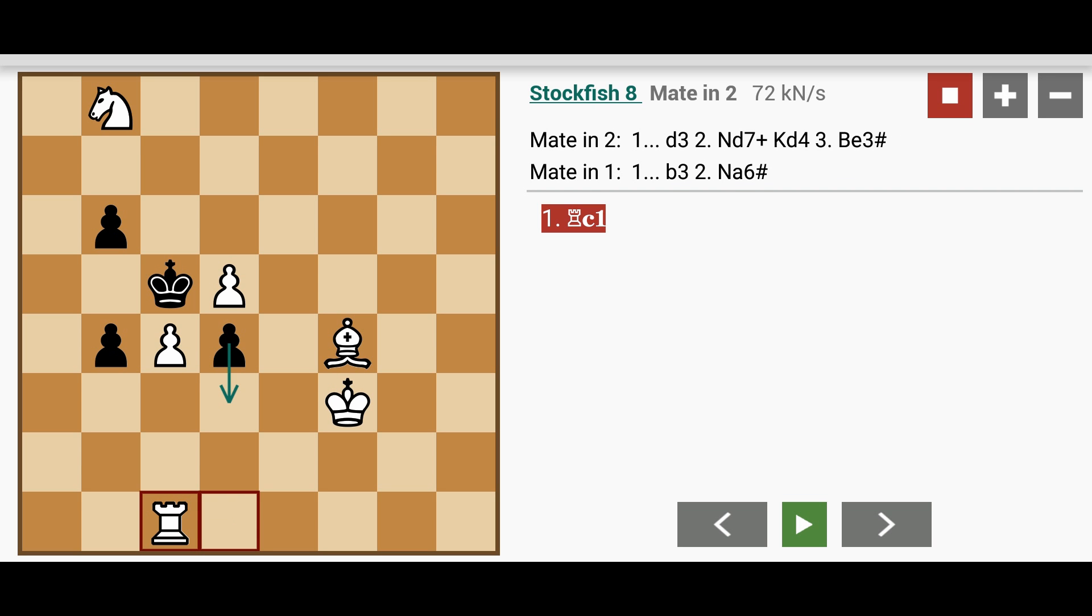Rook to c1. This is what we might call a quiet move, but it actually serves the purpose of defending the pawn on c4 and basically locking the king in.